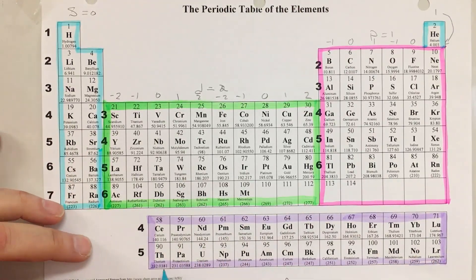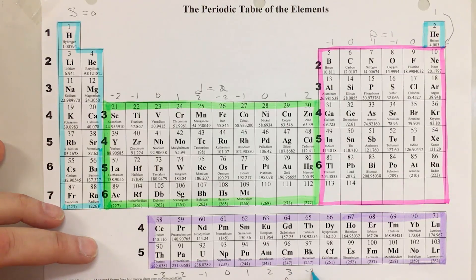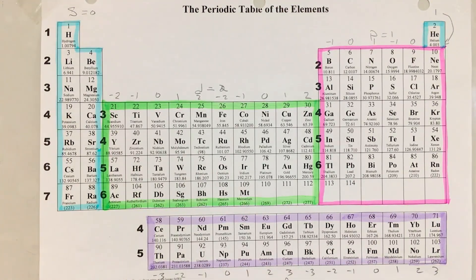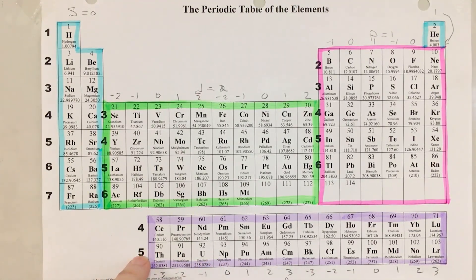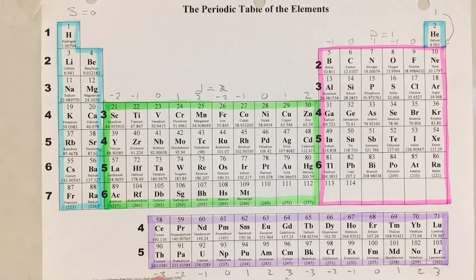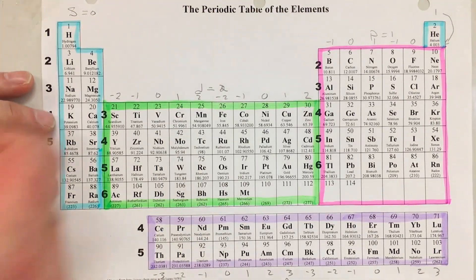The f block similarly has seven orbitals, going minus three, minus two, minus one, zero, one, two, three across the fourteen columns. So we now have all the third quantum numbers for the f block. For uranium, the first quantum number is 5, the second quantum number is 3 (because that's what an f shape is), and the third quantum number is minus one.